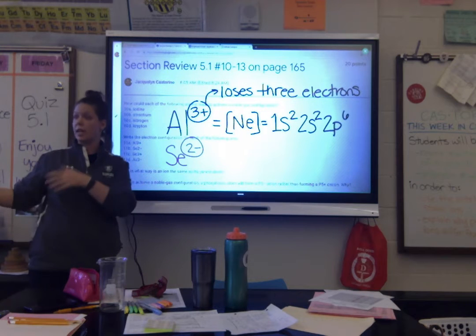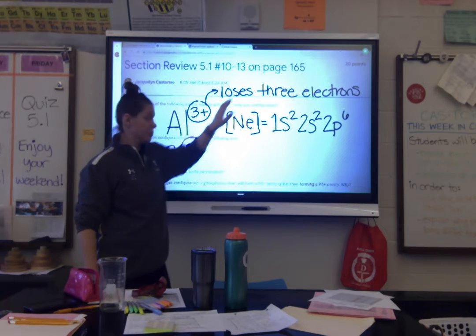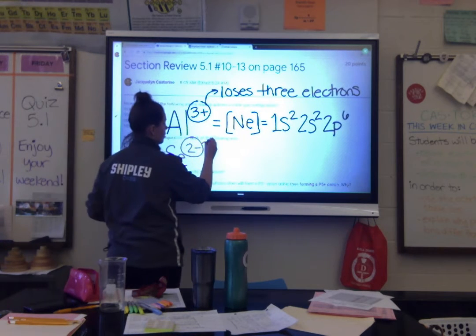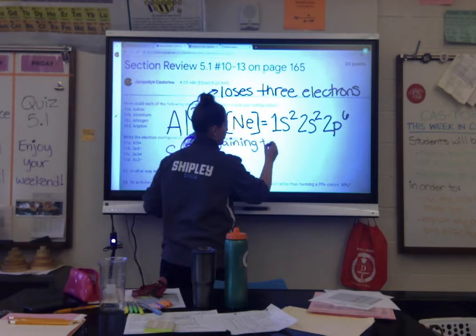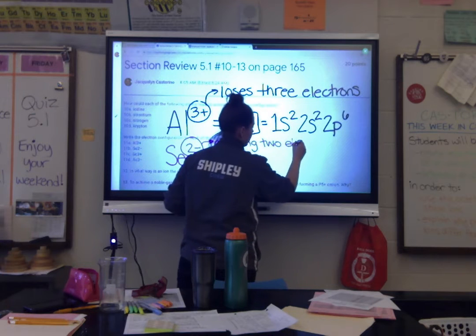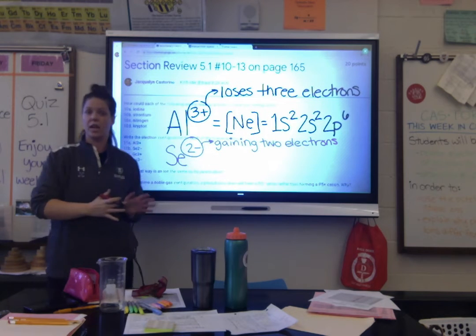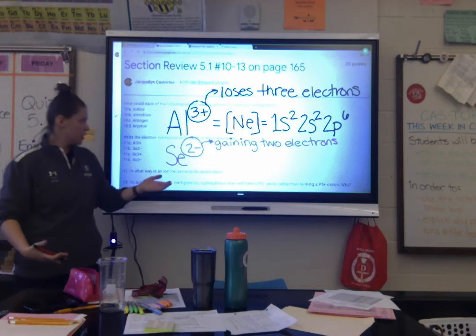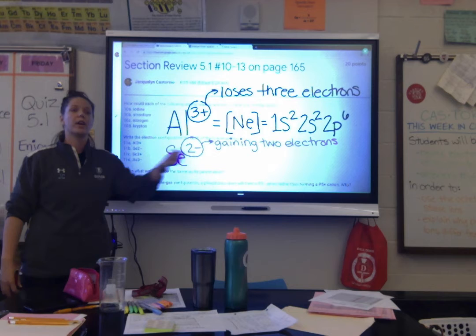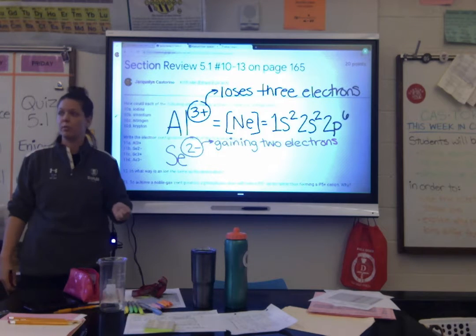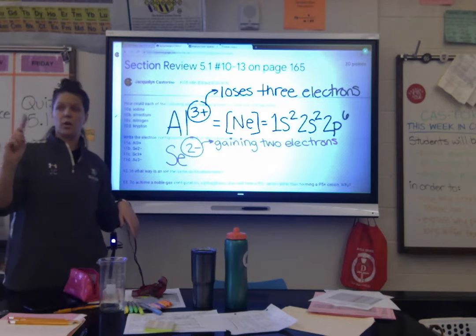Now number 12. The question says: in what way is an ion the same as its parent atom? We went over questions 1 through 9 yesterday and one of them asked how atoms and ions are different. Do you remember what makes them different? What distinguishes atoms from ions?